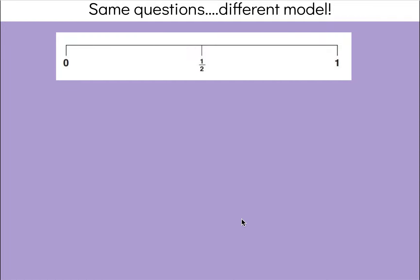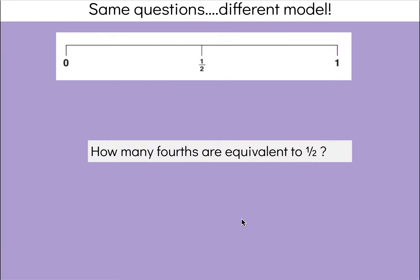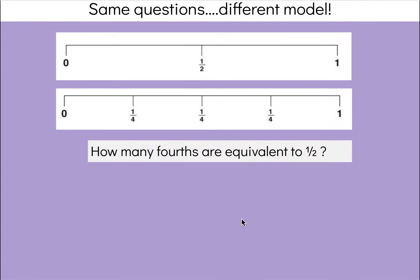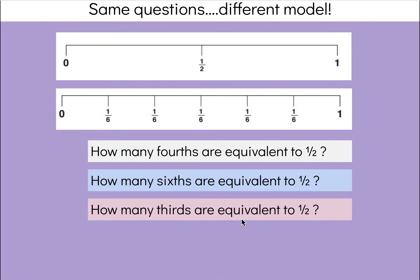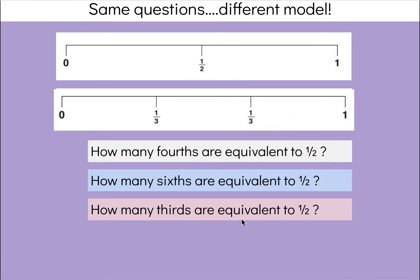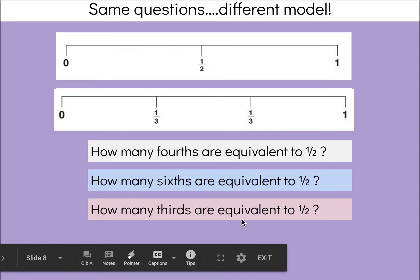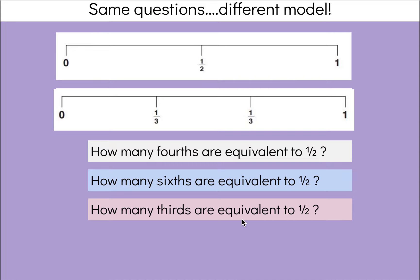We can look at the same questions and just use a different fraction model. Instead of fraction bars, what if we used number lines? How many fourths are equivalent to one-half? If my same whole was broken into four equal parts, it would take two-fourths to be equivalent to half. How many sixths are equivalent to one-half? Same whole — I just changed how many equal parts I was dividing it into. Three-sixths is equivalent to one-half. How many thirds are equivalent to one-half? Here you can clearly see no thirds are equivalent to one-half. One-third is less than our benchmark fraction of one-half, and two-thirds is greater than our benchmark fraction of one-half.